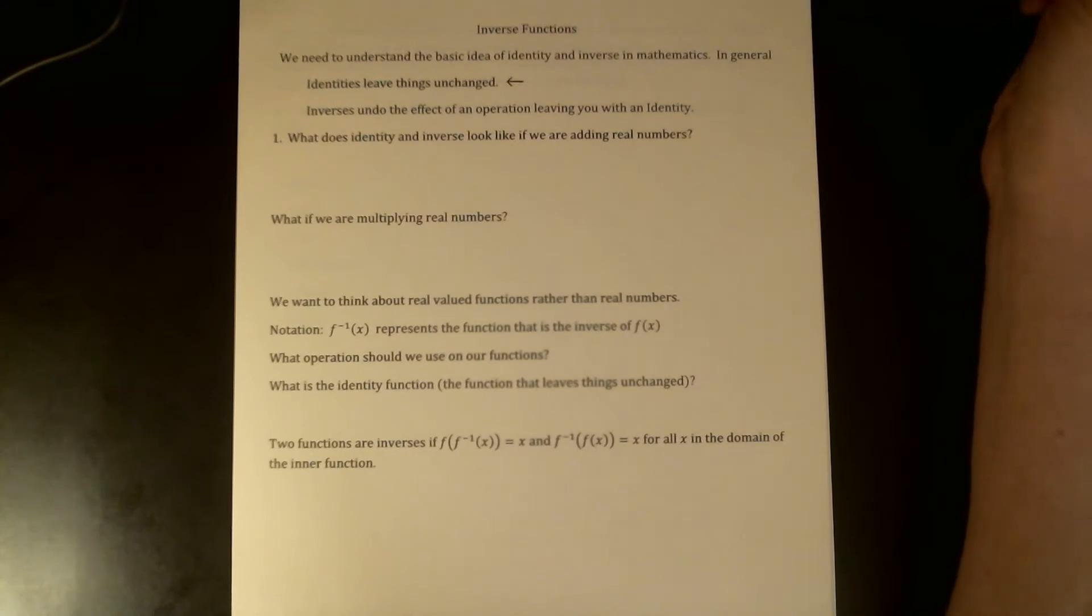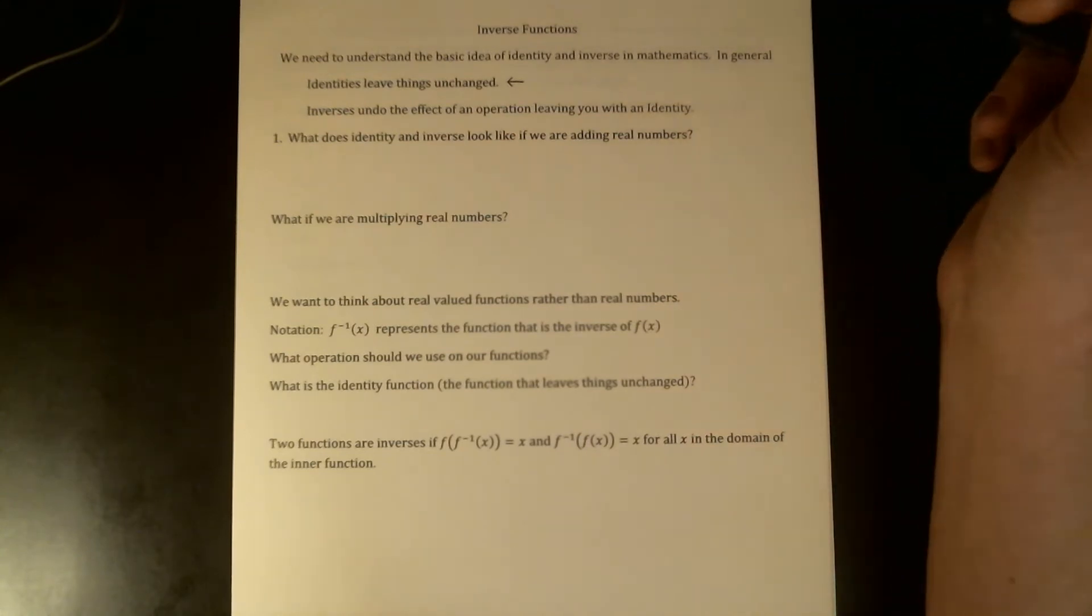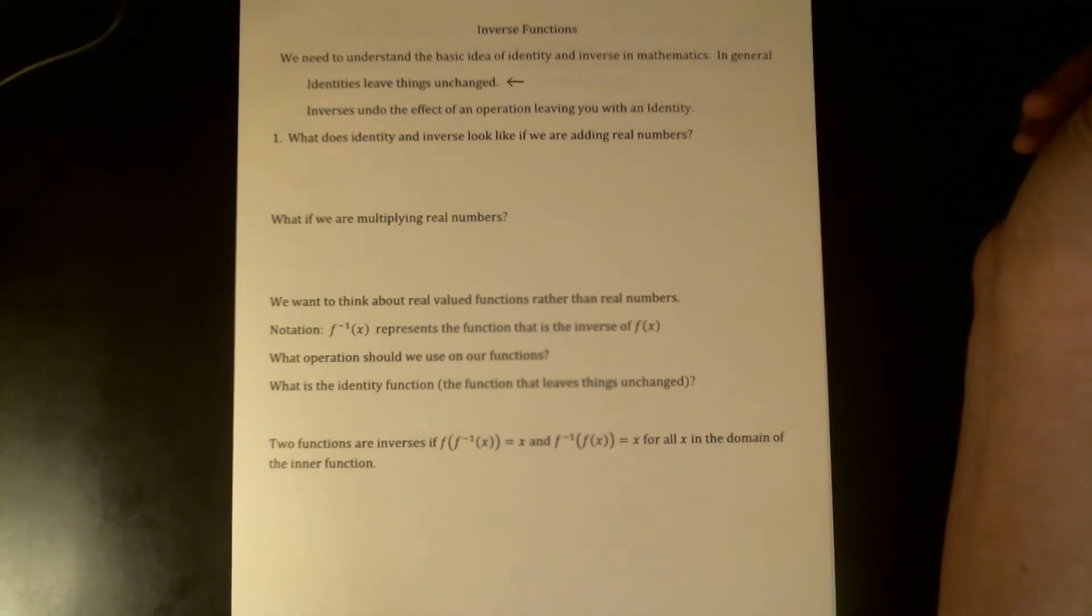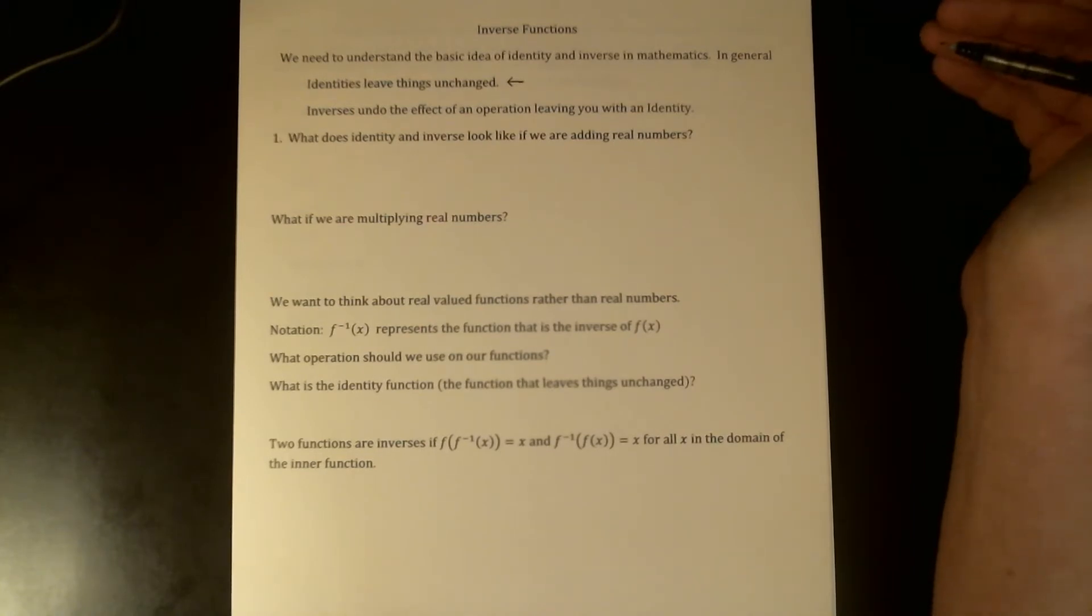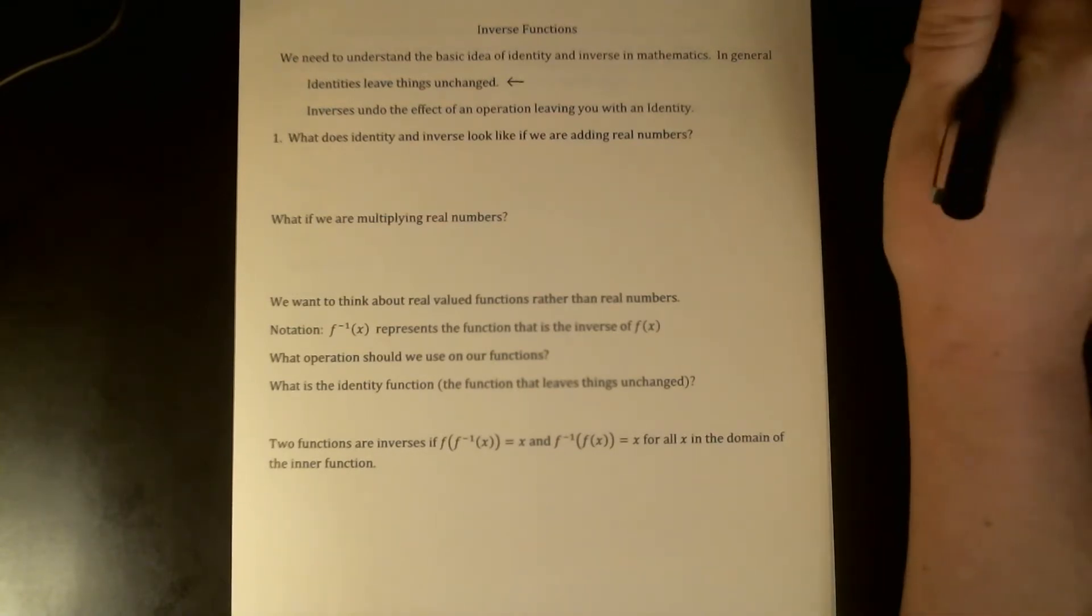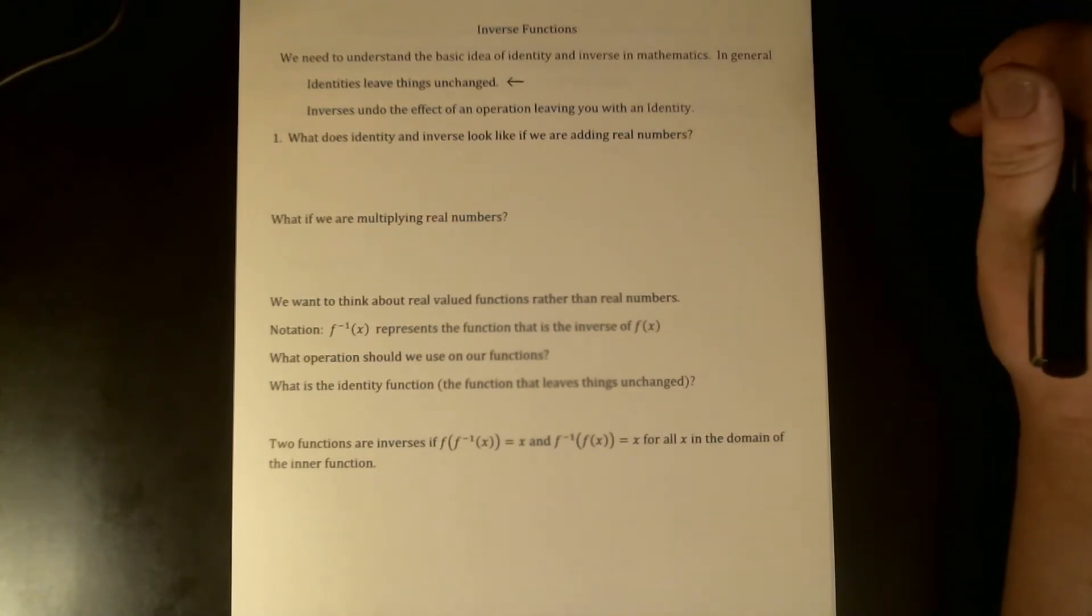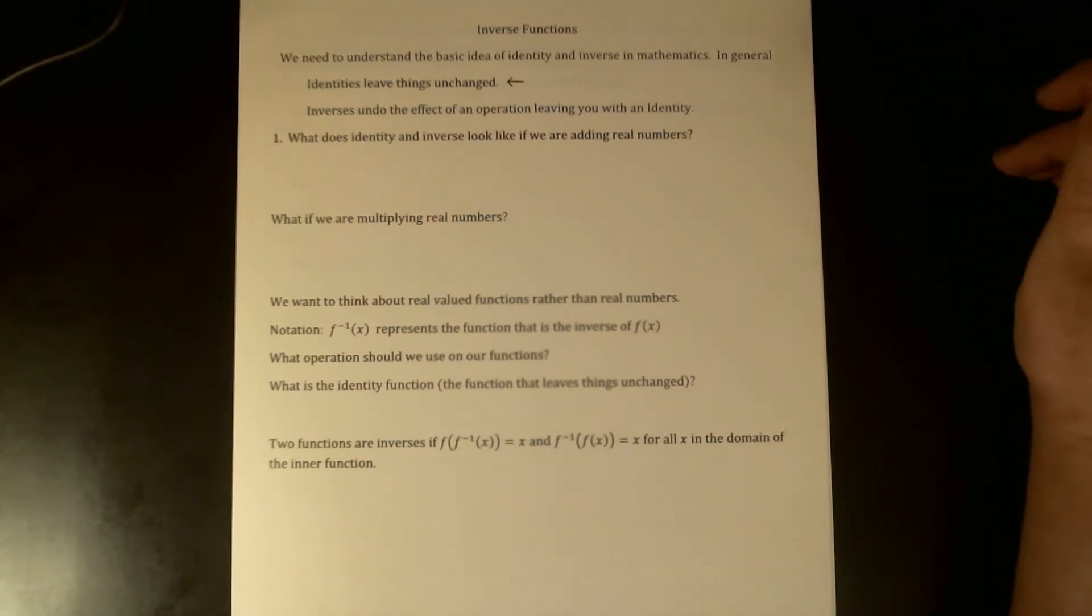Inverses are basic ideas defined in terms of an identity. An inverse should undo the effect of some operation that we're looking at, meaning that when you apply an inverse to something it should leave you with the identity. This is our basic working idea: identities don't change things, inverses will negate the effect of some operation, returning us back to an identity.